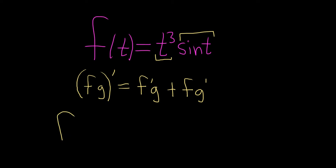The derivative in this case is the derivative of the first, so 3t². That's using the power rule - you bring down the 3 and subtract 1. So derivative of the first times the second, which is sin(t),